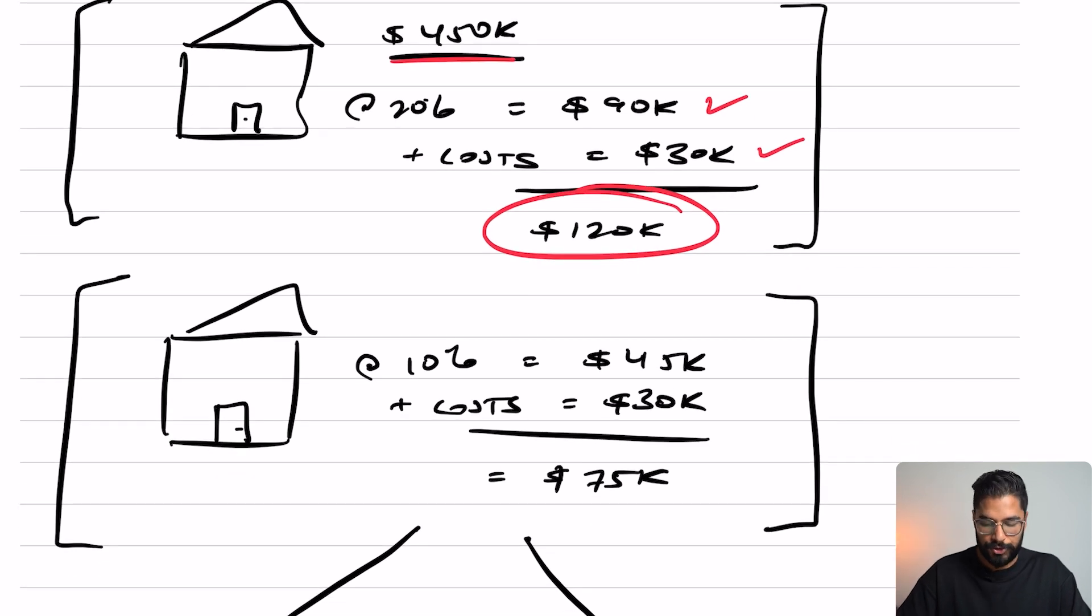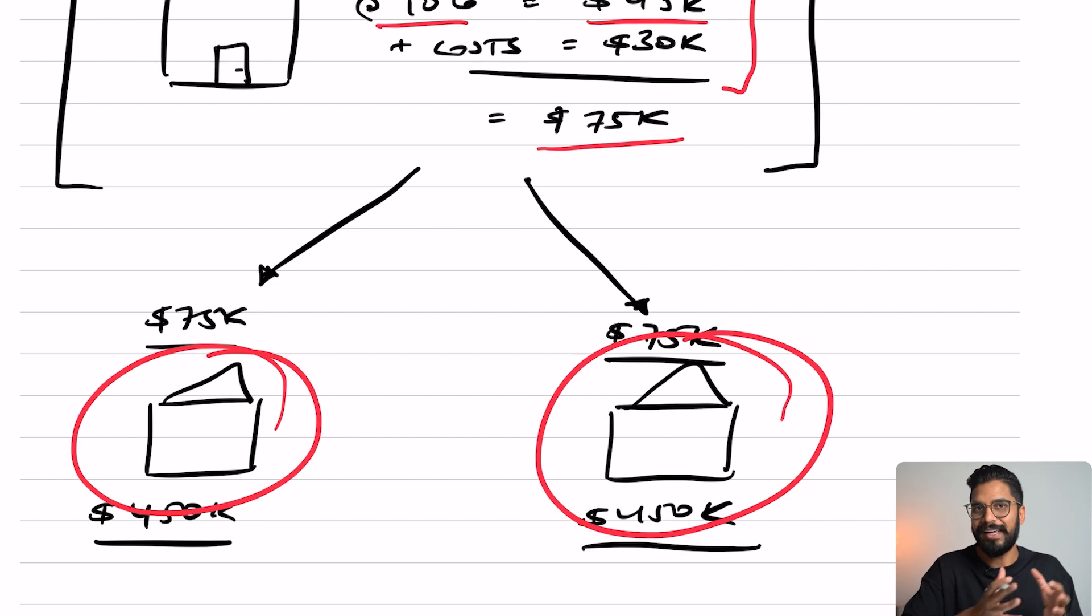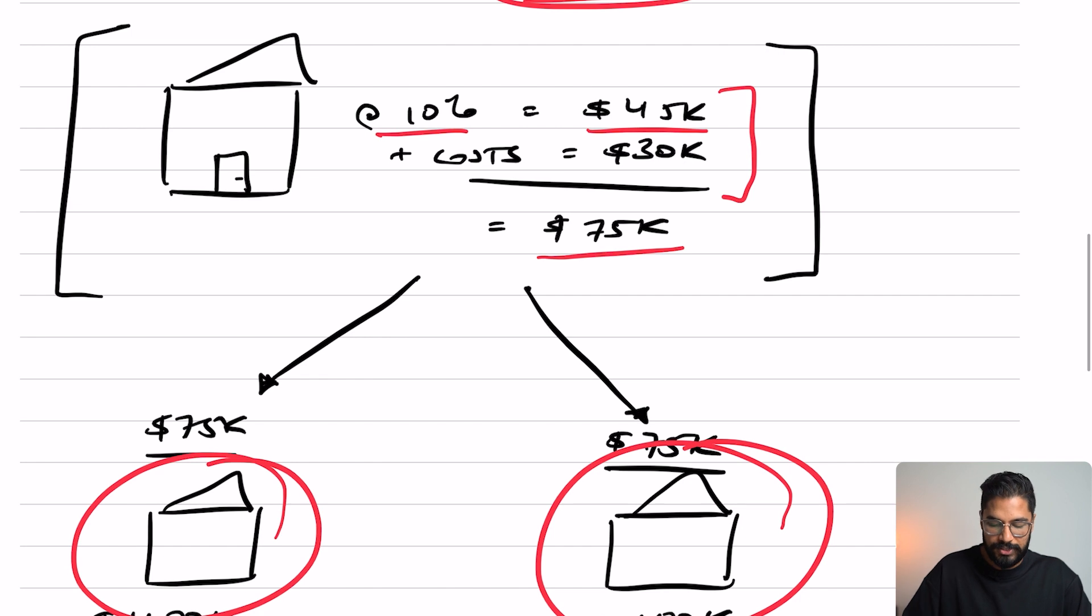But if you did go ahead and go with option two, which is a 10% deposit, that would mean that your outlay is only $75,000 given that your deposit is $45,000 now. That would allow you to actually use the $75,000 and purchase one property, but you could go ahead and actually purchase two properties given you already have the funds available to you. If you go back to example one, you're spending $120,000 and that would not be enough for you to go ahead and purchase another one.